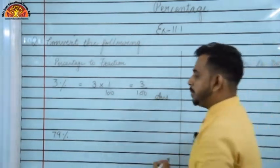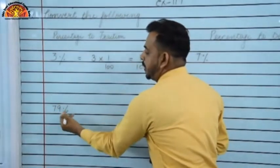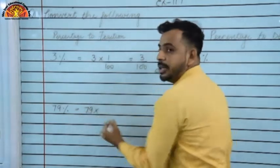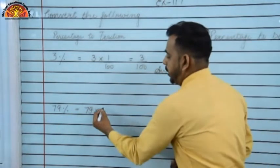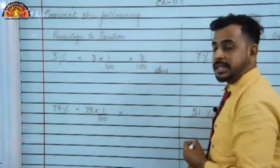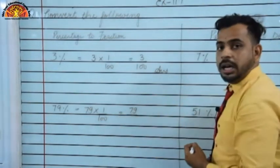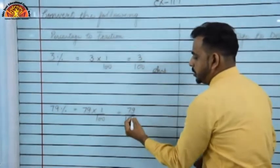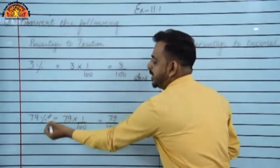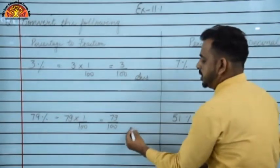Another example from question 3: 79%. Remove the percentage sign and multiply by 1/100 → 79 × 1/100 = 79/100. This is the fraction form and this is the answer.